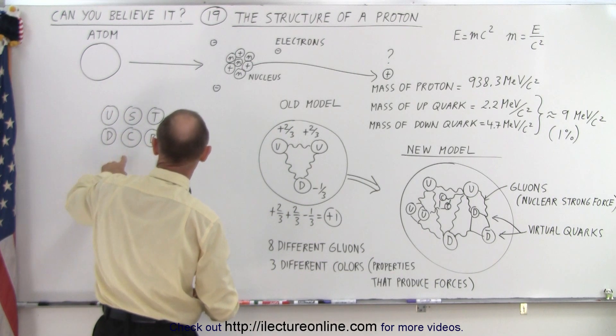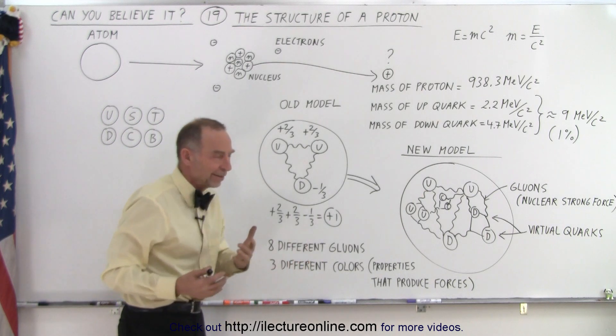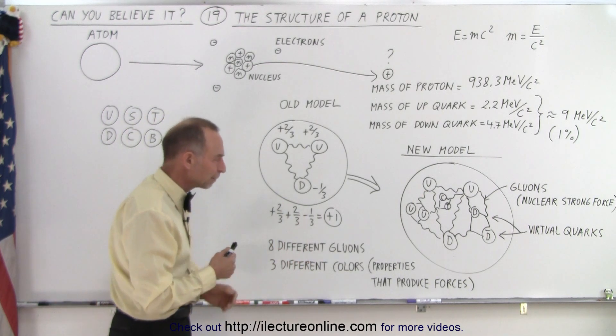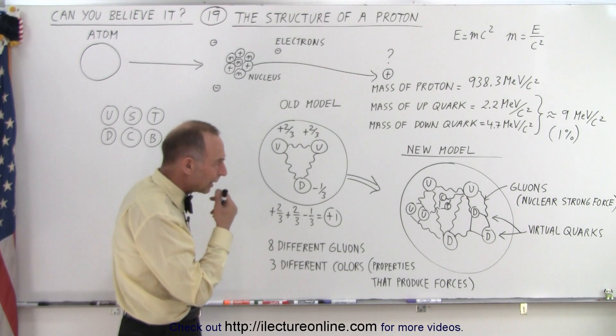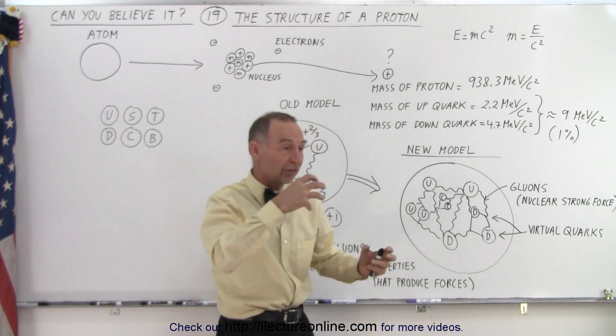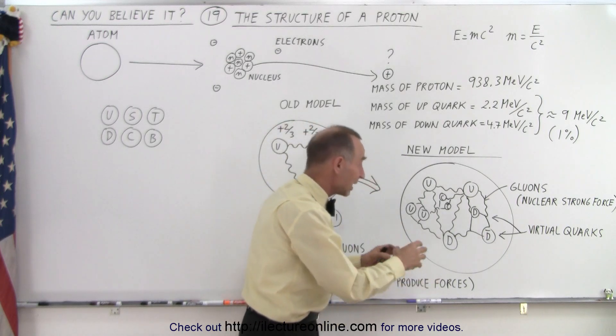an up and down, a strange, a charm, a top and a bottom. Just means there's six different quarks with six different masses. And they would be constantly moving and the virtual quarks would come into existence momentarily and then disappear again.